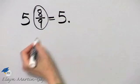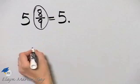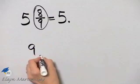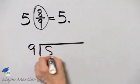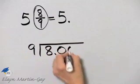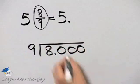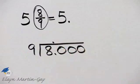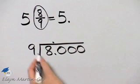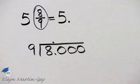The second way is just to divide the denominator into the numerator. So let's divide nine into eight, and let's add some zeros and start dividing. Here is my decimal point in the quotient.